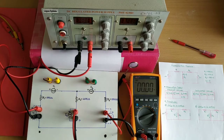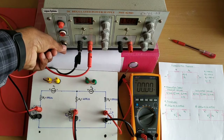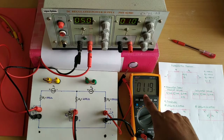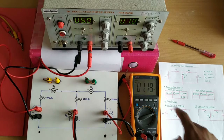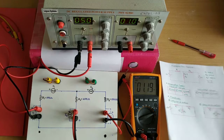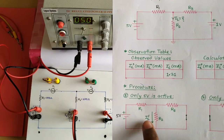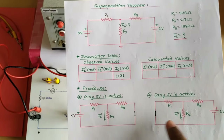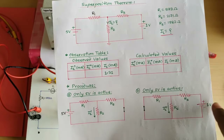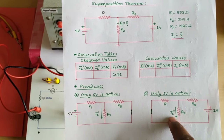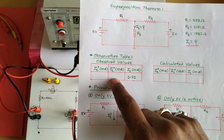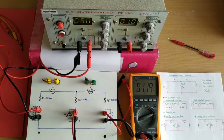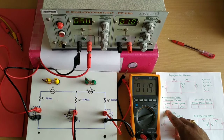With only 5V active and 1V shorted, the ammeter reads 1.19 milliampere. This is IL' — the current through R2 due to the 5V source alone. We note this value: IL' = 1.19 mA.